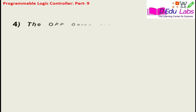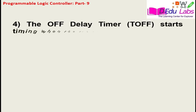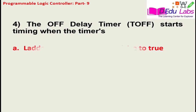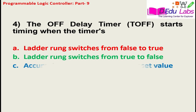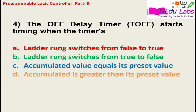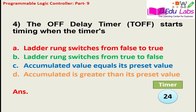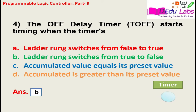Question number four: the off-delay timer TOFF starts timing when the timer's — option A: ladder rung switches from false to true, option B: ladder rung switches from true to false, option C: accumulated value equals its preset value, option D: accumulated value is greater than its preset value. The answer is option B — the ladder rung switches from true to false condition.